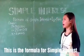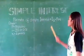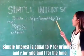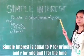This is the formula of simple interest. Simple Interest is equal to P for principal and R for the rate and T for the time.